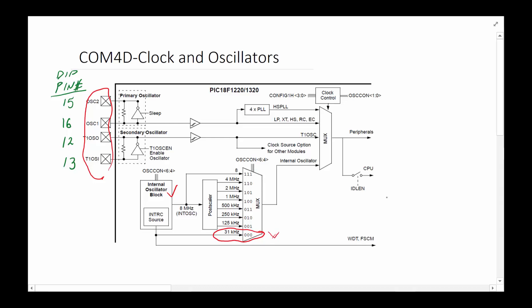We're going to assume that the period of the system clock is 32 microseconds for simplicity. So when we're doing calculations, we're going to assume the system clock period is 32 microseconds. This becomes very important later on when we come back to analyze how to calculate how long a program takes to execute a certain task.